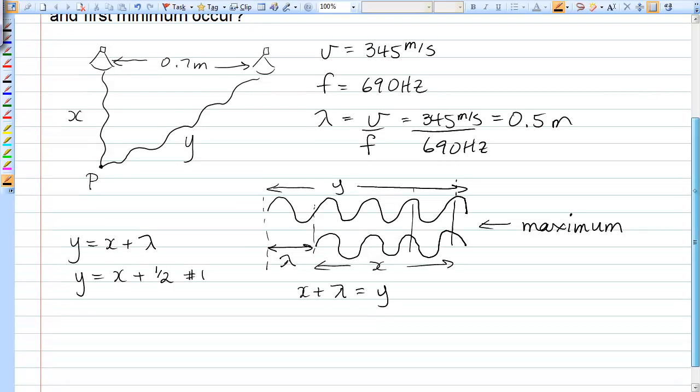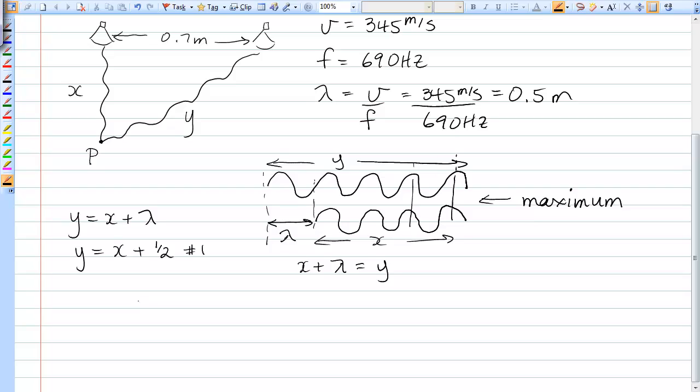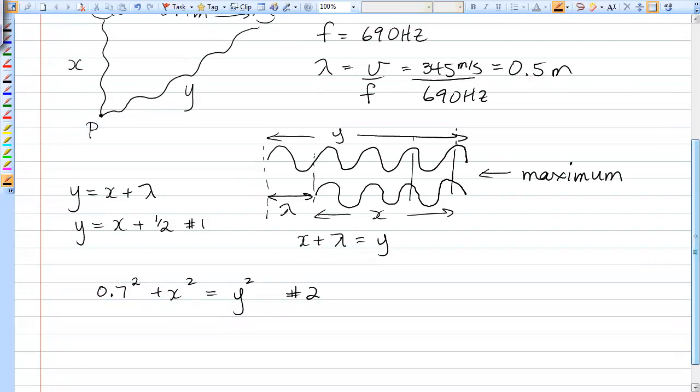Now, just from the geometry of the two speakers, we also have Pythagorean theorem that 0.7 meters squared plus X squared is equal to Y squared. That's equation number two. So just sub number one into number two and solve for X to find the position of that first maximum.